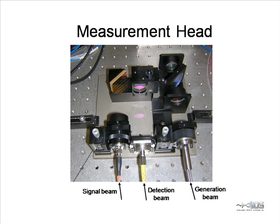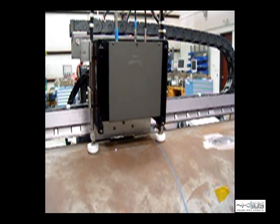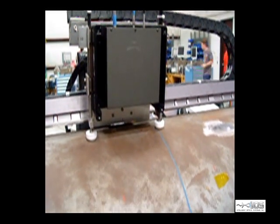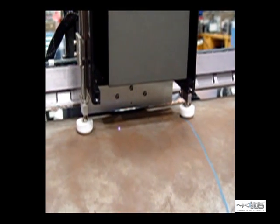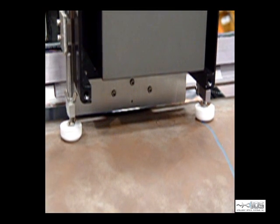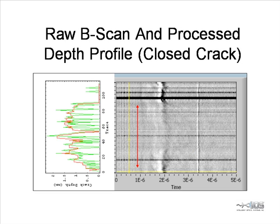Our measurement head was only about 7 inches on a side and was fully fiberized. In this video we see our head scanning a single crack. The detection beam is at a wavelength of 1550 nanometers and so it is not visible in the video. In this slide we show a raw B-scan of one of the scanned cracks, along with the crack profile as provided by our signal processing algorithm. The crack profile positions are aligned with the positions of the B-scan.